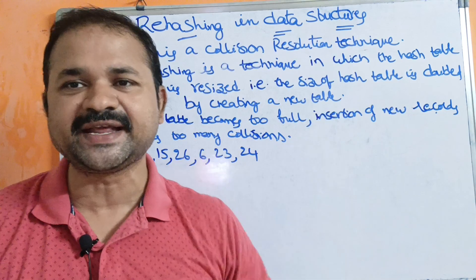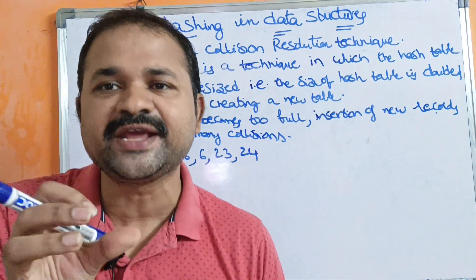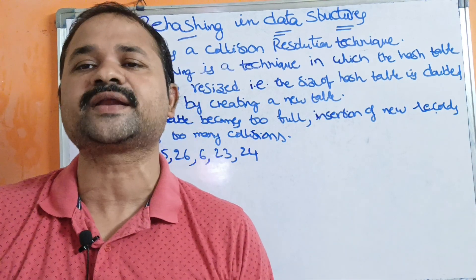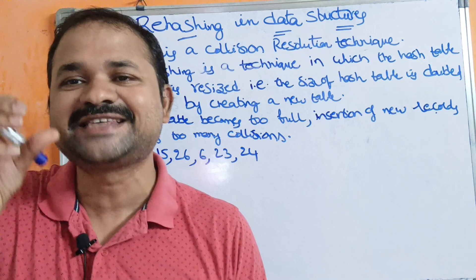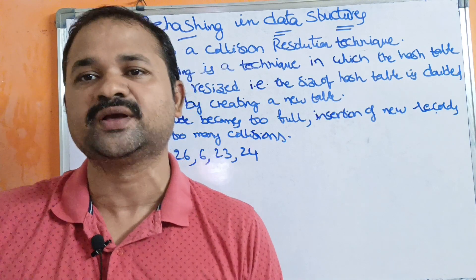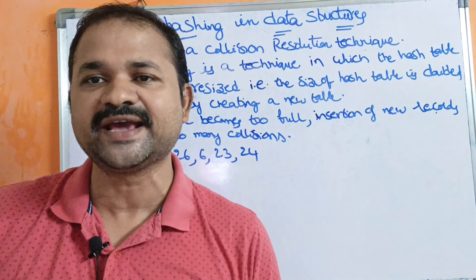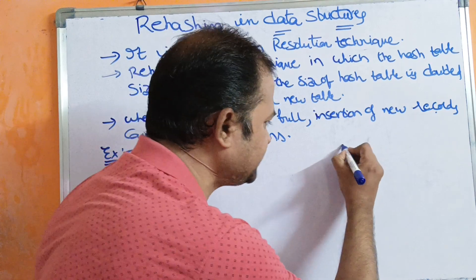We know what a collision is — when two records are expecting the same location in the hash table, then it is called a collision. Let us see an example.